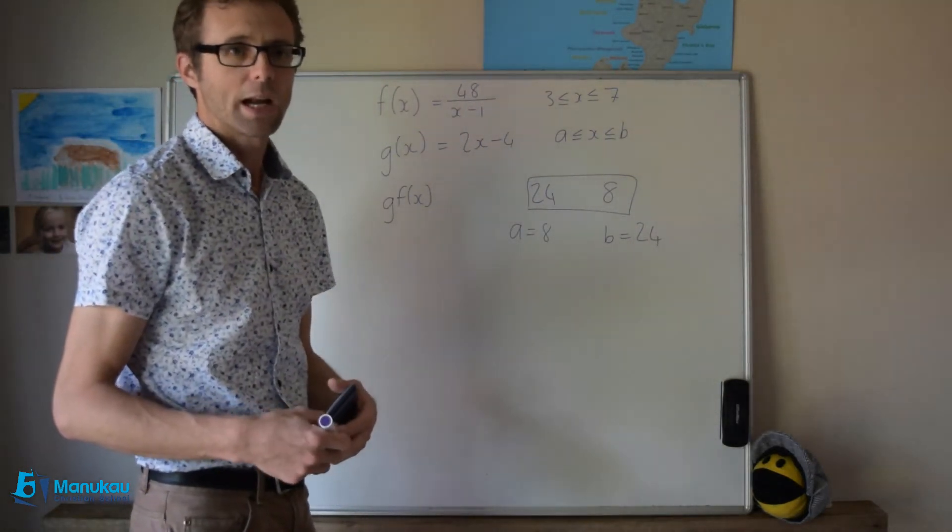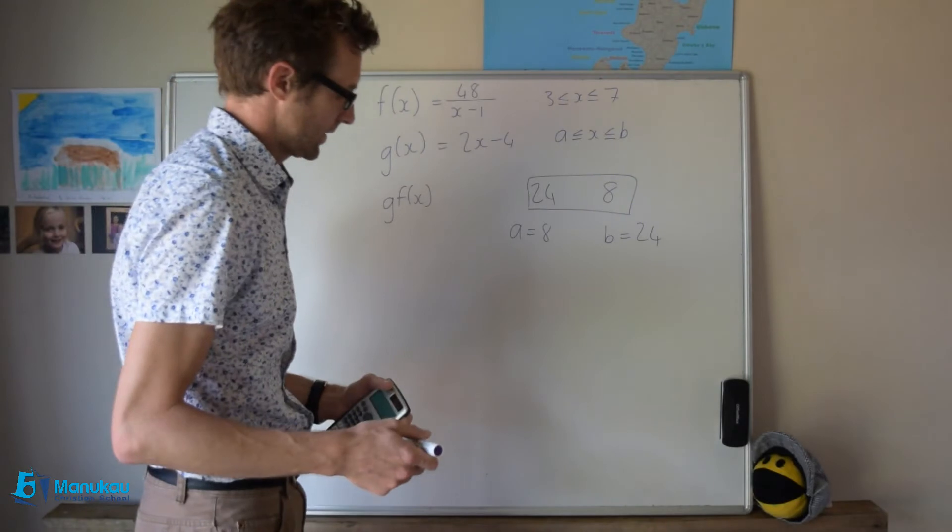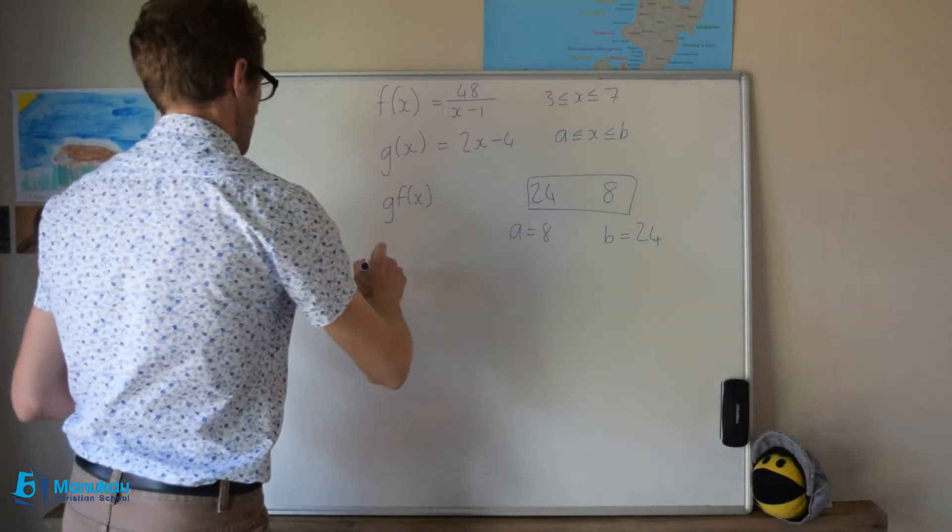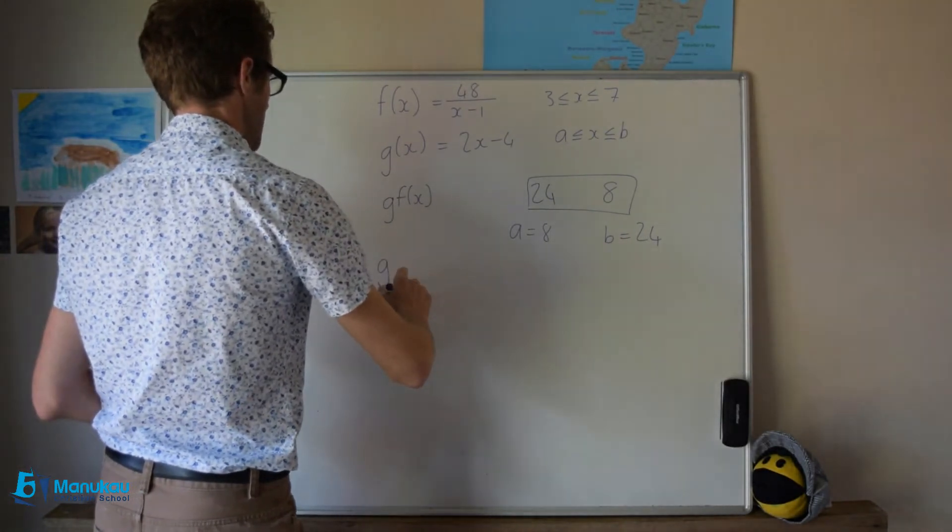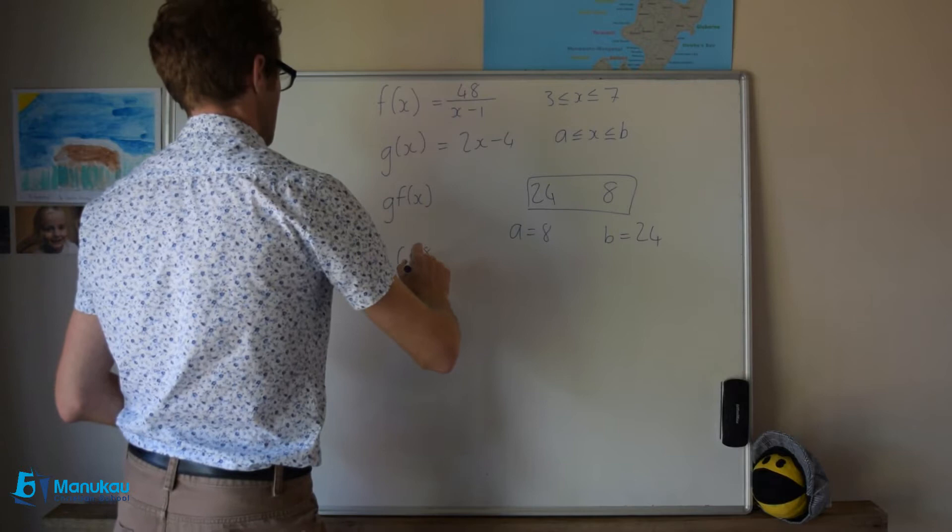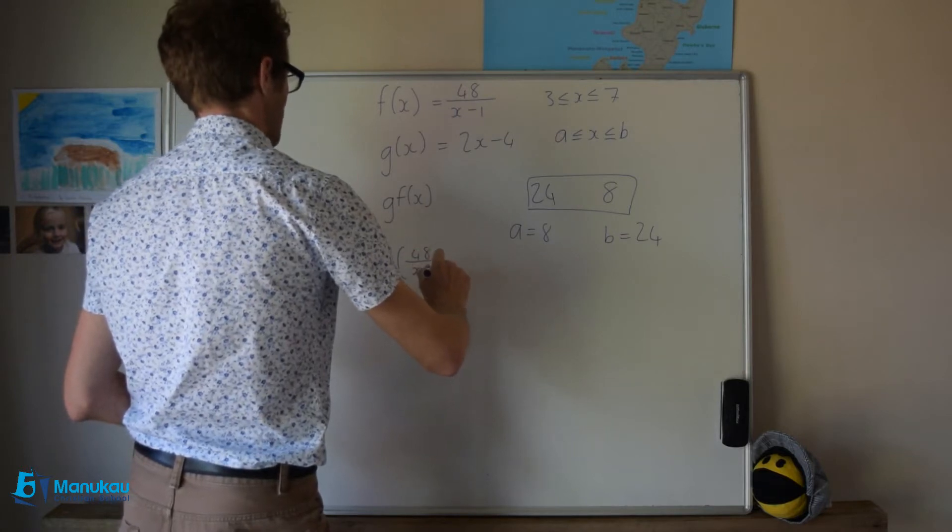The second part of this question is asking us to form an expression for gf of x. So remember how we do this: g into 48 over x minus 1.